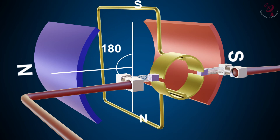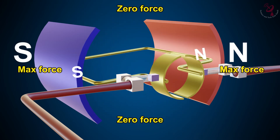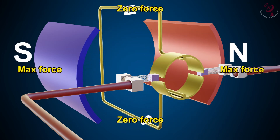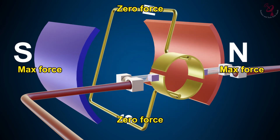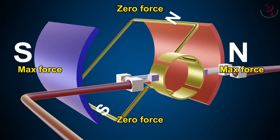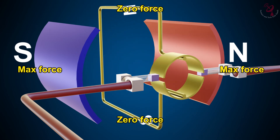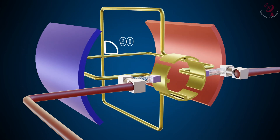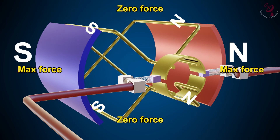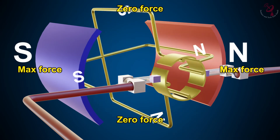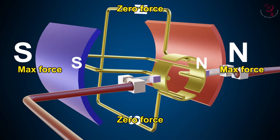Another problem with this type of DC motor is that whenever the coil comes perpendicular to the magnetic field, both magnetic forces are equal and opposite, resulting in zero net force. Therefore, the coil will not rotate at a stable speed. The solution is to place another coil perpendicular to the first coil. Whenever one coil gets zero force, the other will be at maximum. Now this DC motor can run effectively.